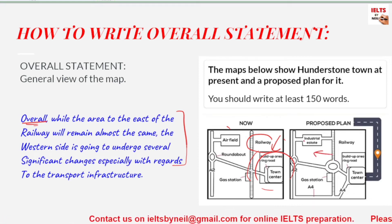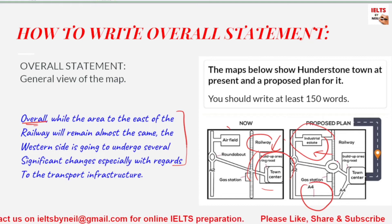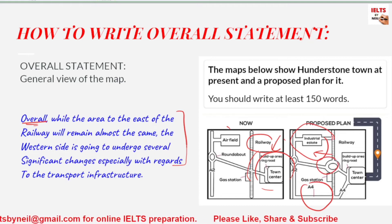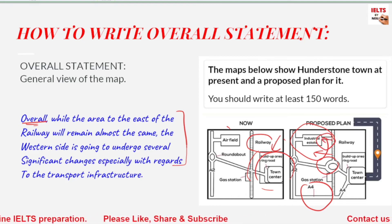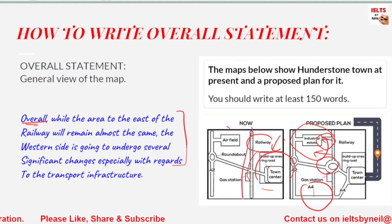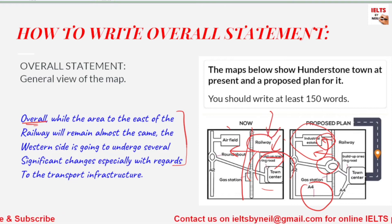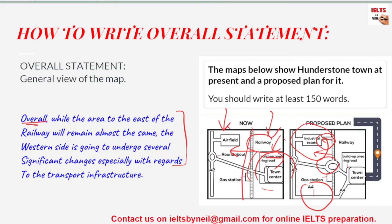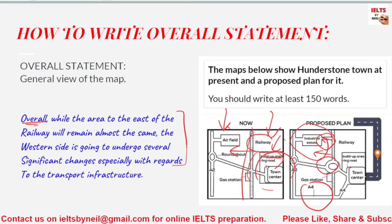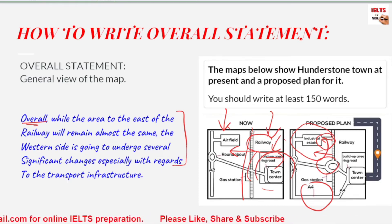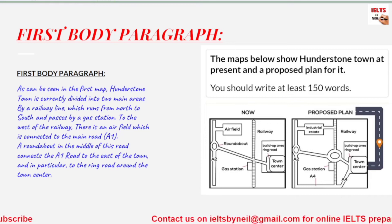'The western side is going to undergo several significant changes, especially with regards to transport infrastructure.' So west of the railway — this side — will undergo significant changes: a new road will be built, a roundabout will be built, and a new railway connecting the industrial estate will be added. What I've done here is divide the map into two parts — west of railway and east of railway — with most significant changes occurring in the west. This is our overall statement.